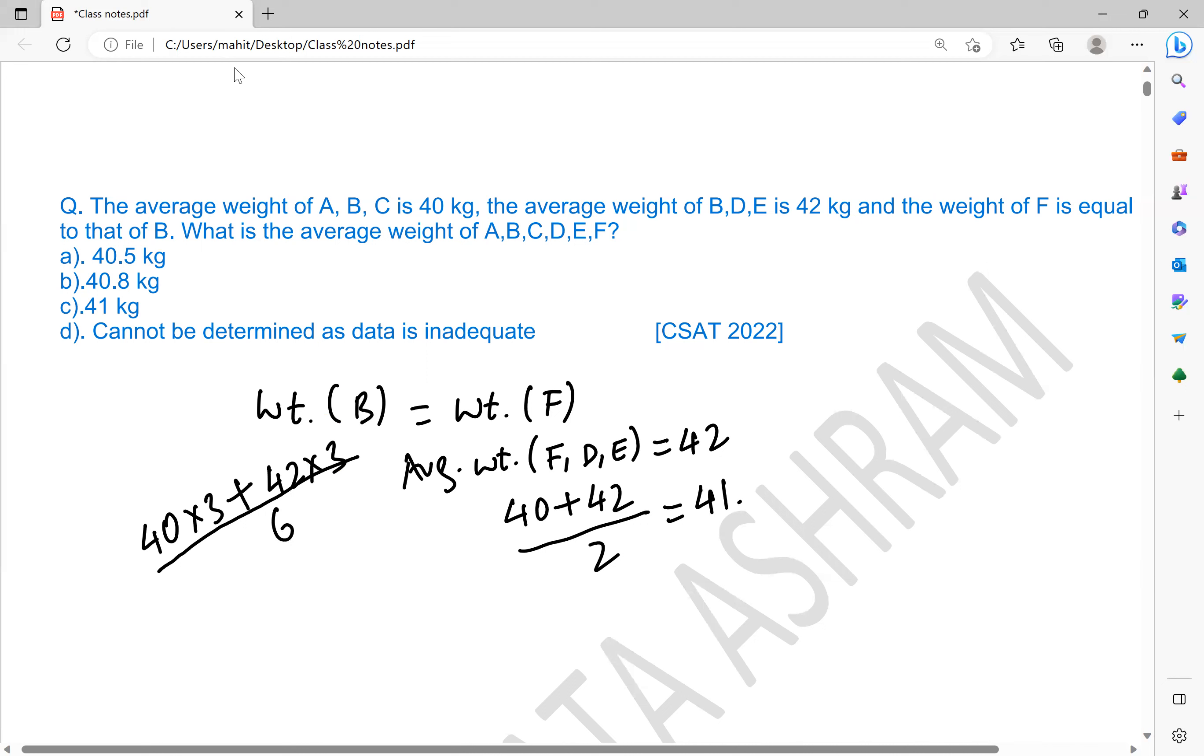Now observe that 3 is common in the numerator in both terms, and in the denominator we have 6. So 3 cancels out from the denominator, and here we get 2. So now we get 40 plus 42 divided by 2, which equals 41. That's it.